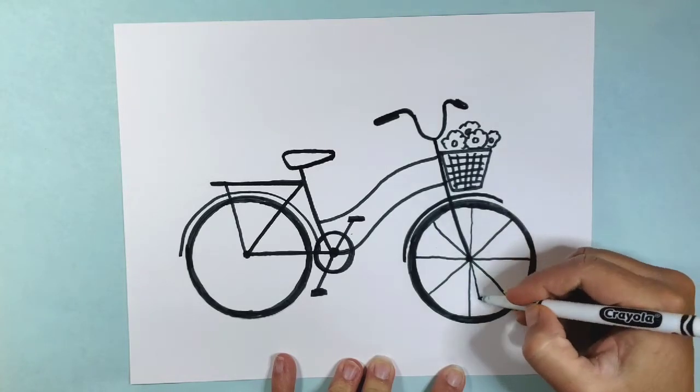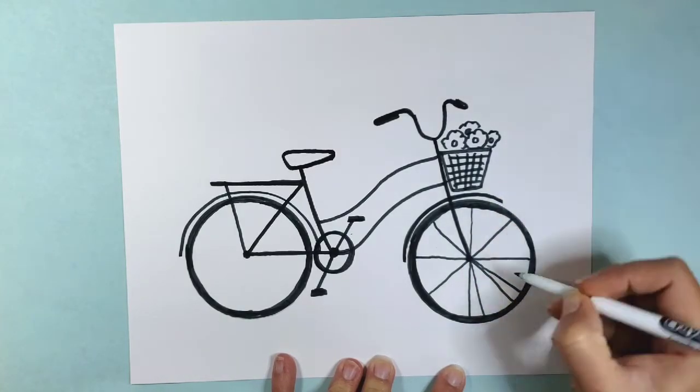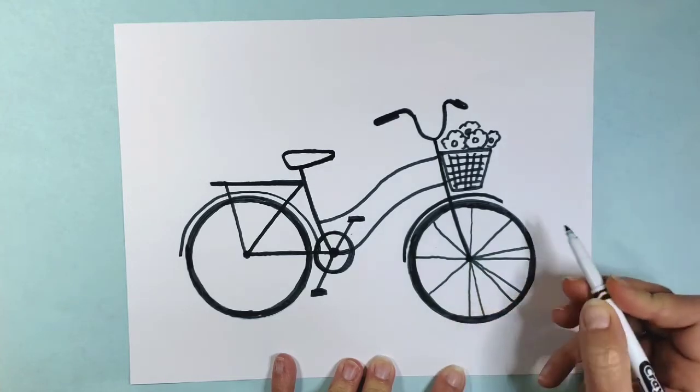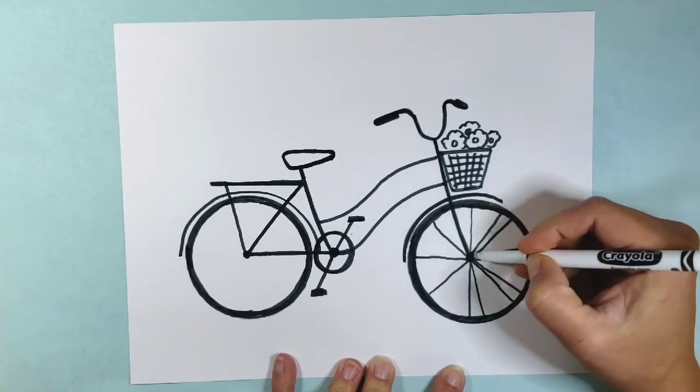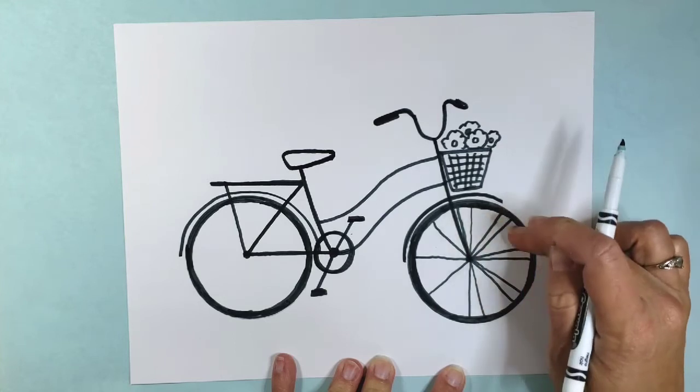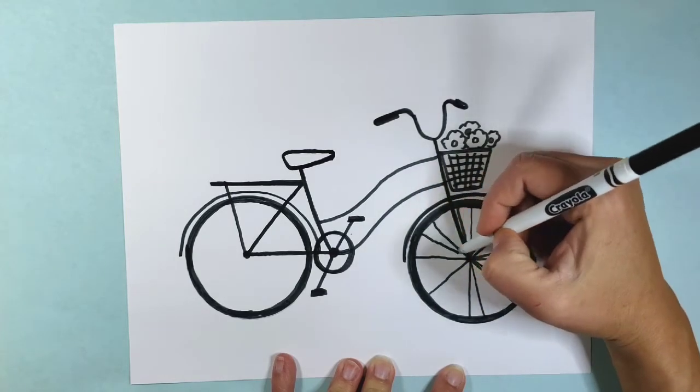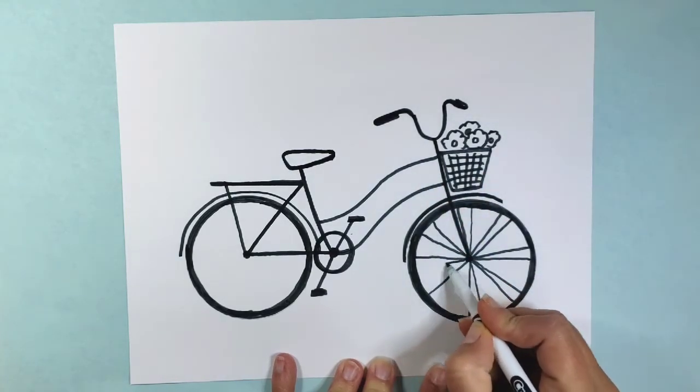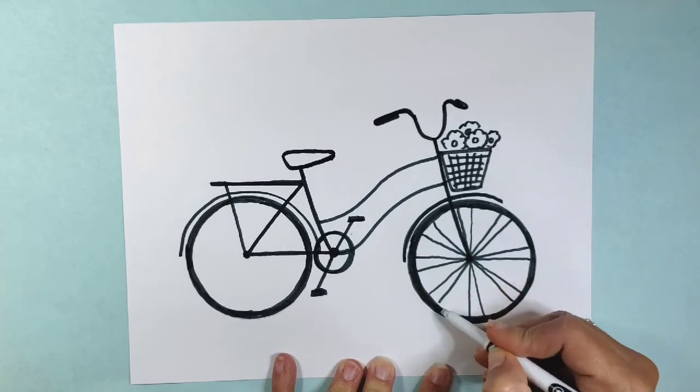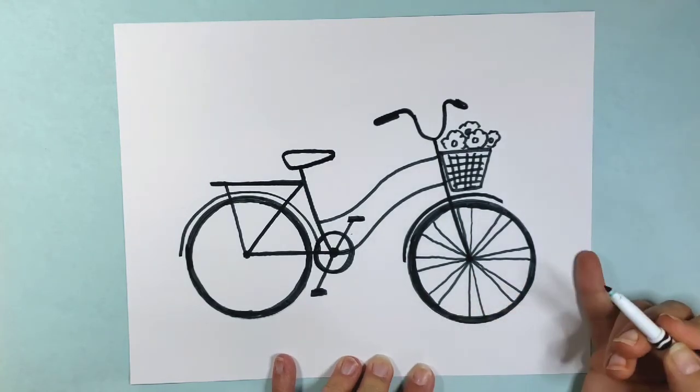Then I'm going to go ahead and add a couple more smaller lines in between. And they don't have to be perfectly spaced out because sometimes bikes have them where there's like too close and then a bigger space. So you can kind of play around with that. But I'm going to add a couple more little strokes like that to make it look like a wheel.